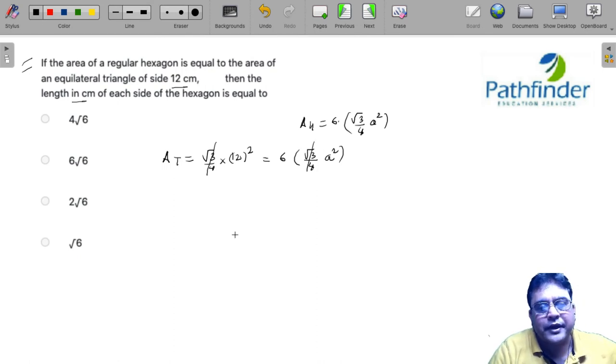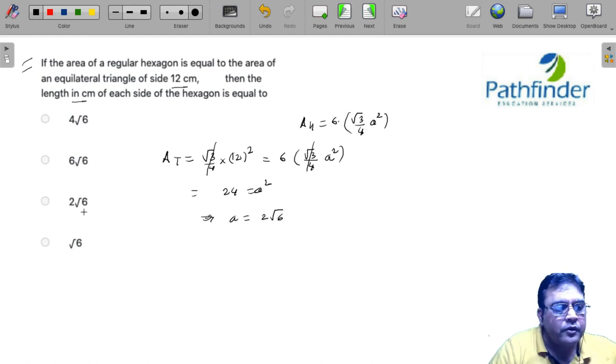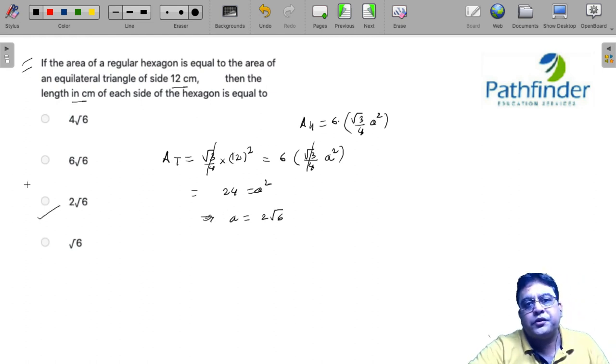Root 3 by 4 cancels, and I will get 12 into root 24 is equal to A square, or A is equal to 2 root 6, which is your answer.